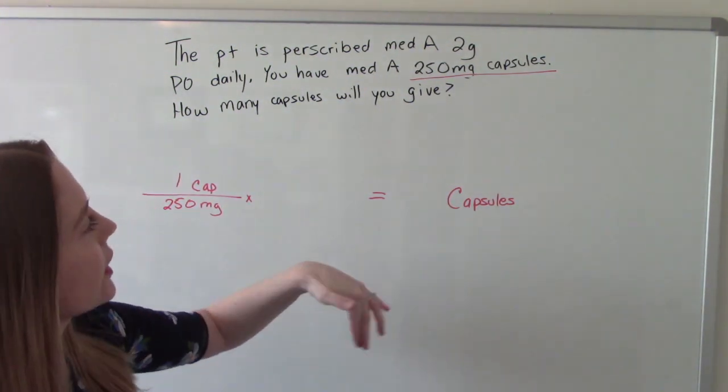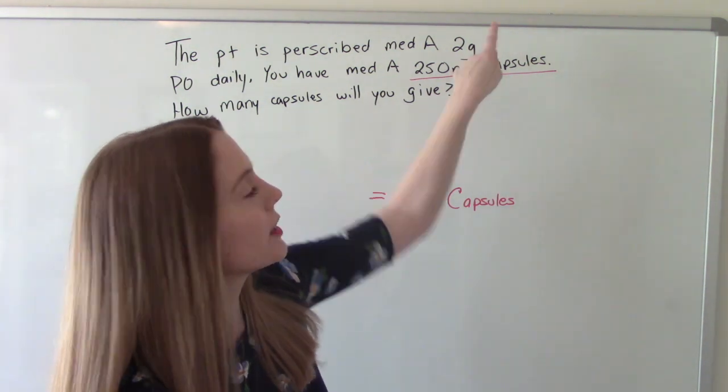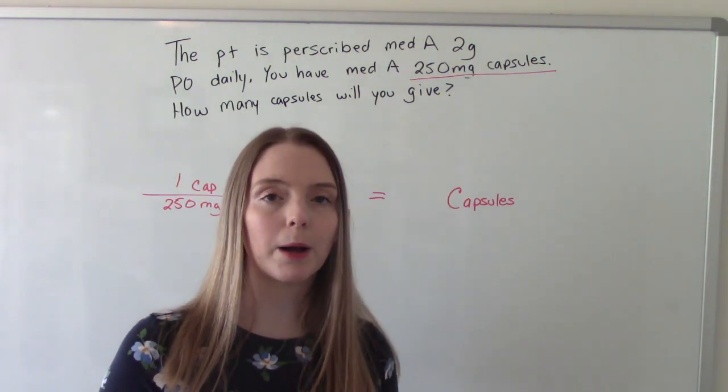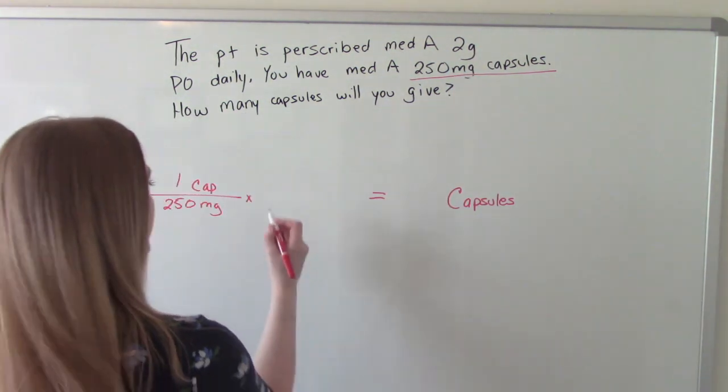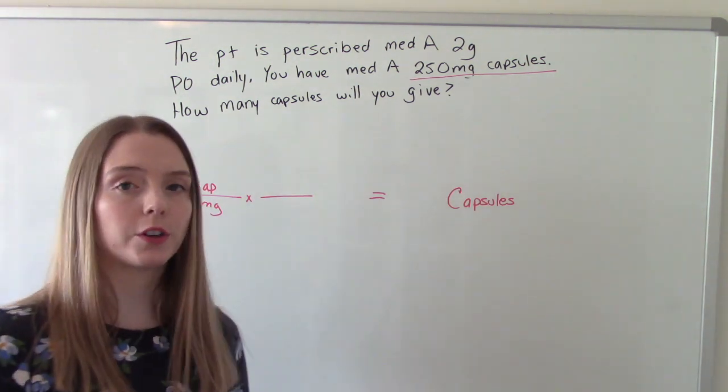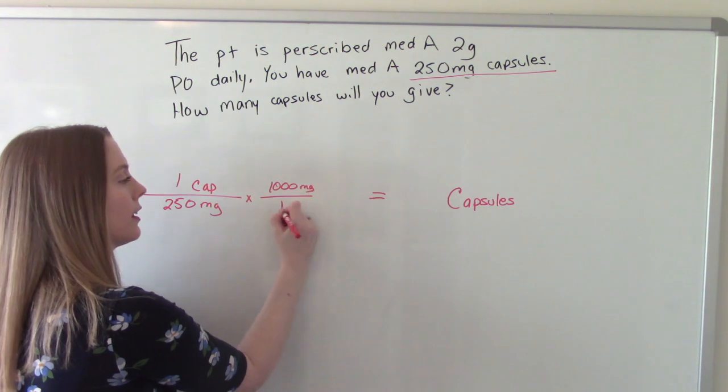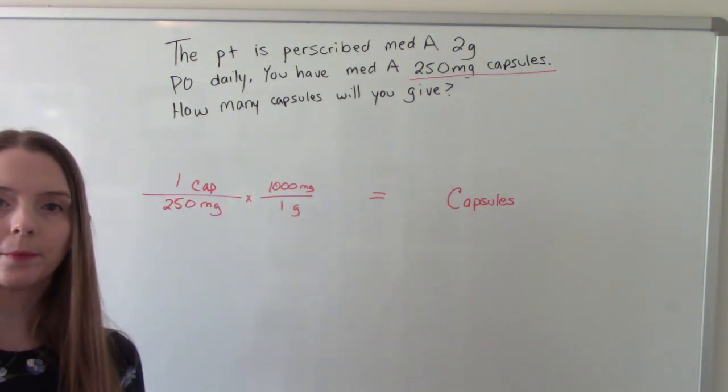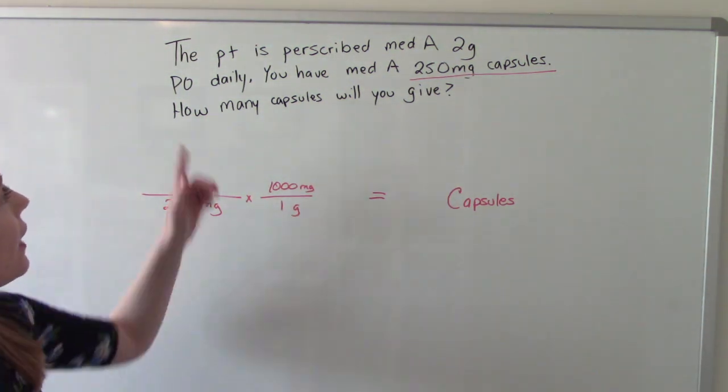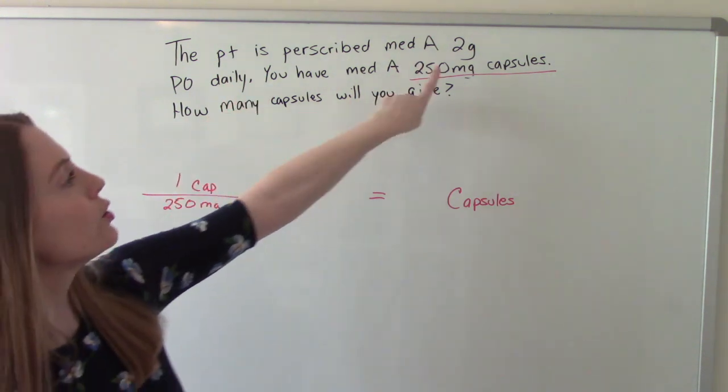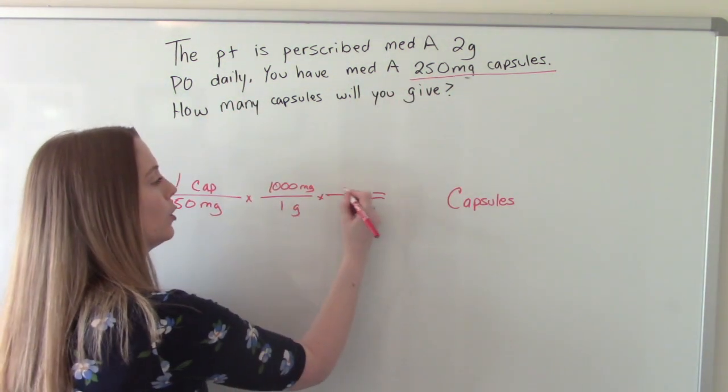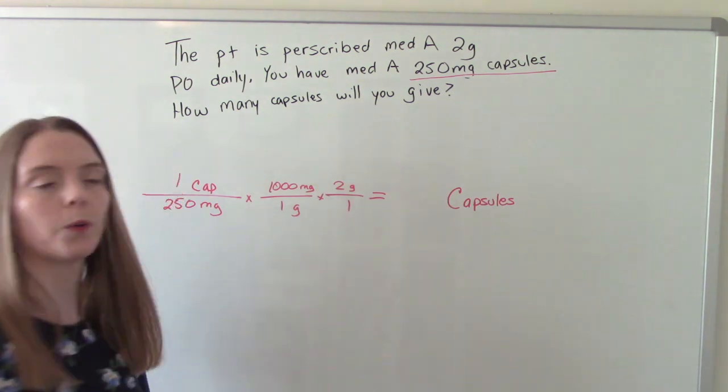So one capsule is the same as 250 milligrams. And now we have to convert milligrams to grams. That's why this is a three-step problem because of the conversion. So how many milligrams are in a gram? One thousand milligrams is the same as one gram. And then what is the patient prescribed? Two grams. So put two grams over one.